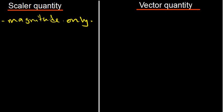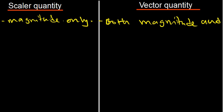It has got no direction. But a vector quantity is a physical quantity which has got both magnitude and direction. We can say that this one has got both magnitude — which is the same as size — and a direction.